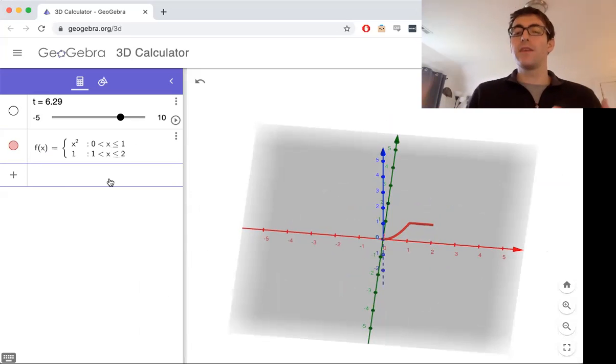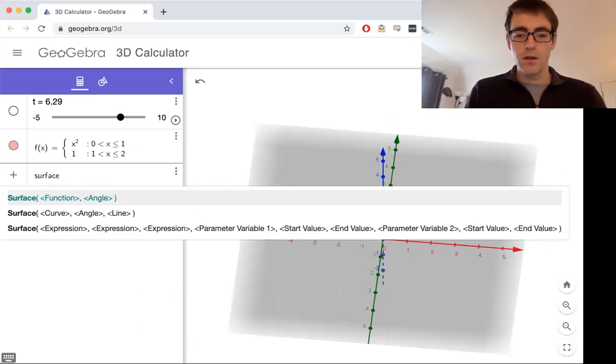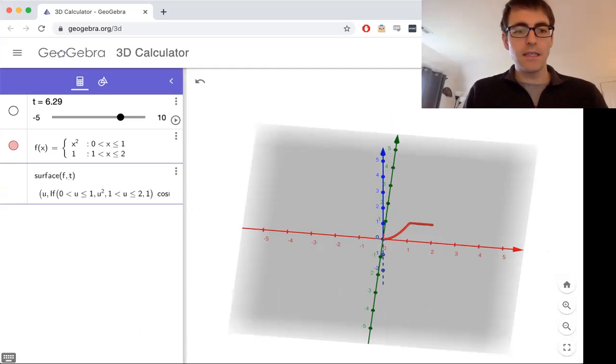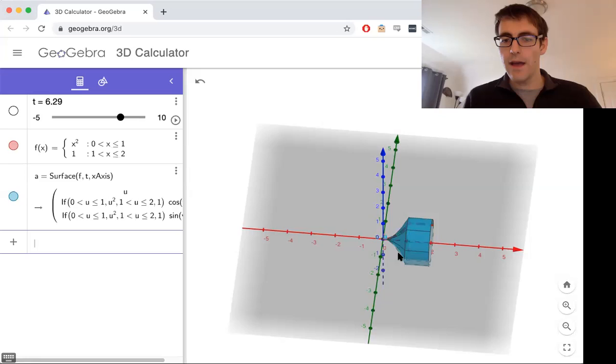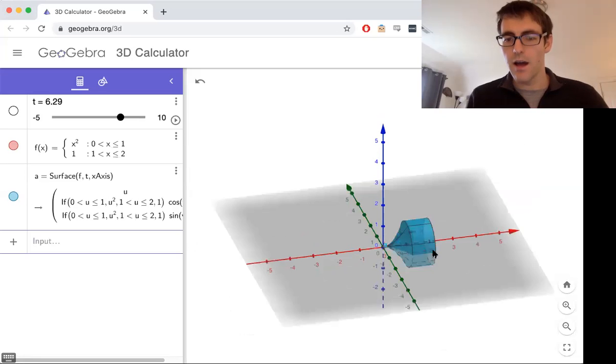And now if I want to revolve this around the x-axis, in this case the red axis, I'm going to do surface f comma t comma x-axis. And then there we have it. There is our goblet.